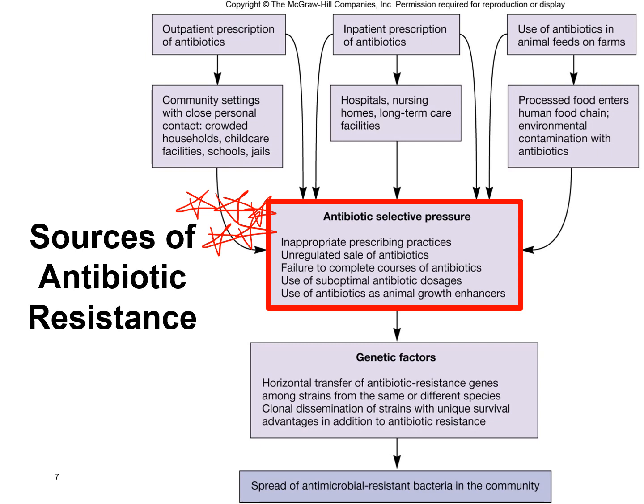Another cause is the unregulated sale of antibiotics, which is more of a problem in developing countries. For example, in Mexico you can walk up to a pharmacist and request amoxicillin for a suspected UTI without a doctor's prescription. This is problematic because you don't know which bacteria you have or which antibiotic will work, and this practice is a significant cause of resistance.